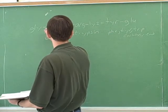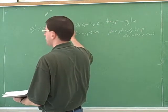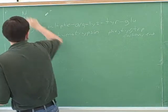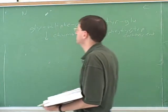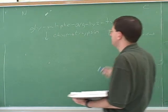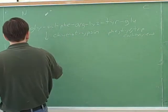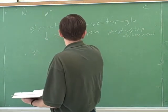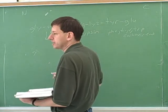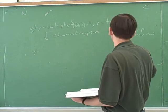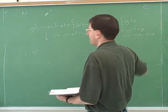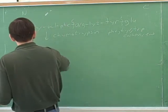Going along the sequence, the first thing we encounter is phenylalanine. Remember, by convention the N-terminus is on the left and the C-terminus is on the right. So we've got glycine, then phenylalanine — and we're going to cleave phenylalanine on the right, because chymotrypsin cleaves on the carboxy end. Then we have arginine, lysine, and then tyrosine, and we cleave there too.